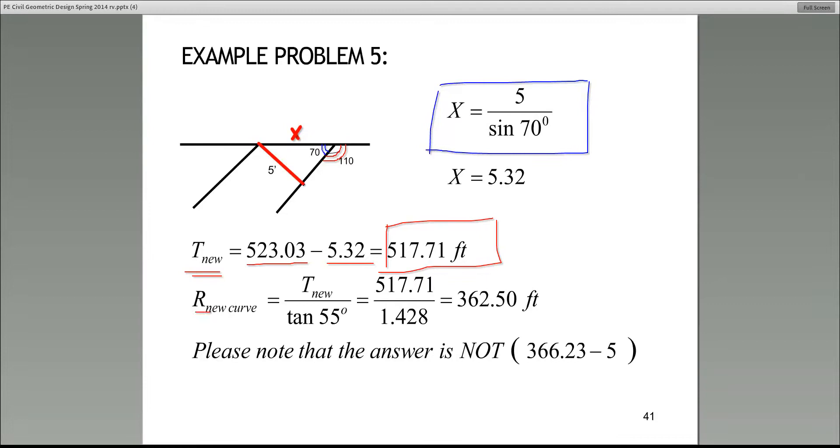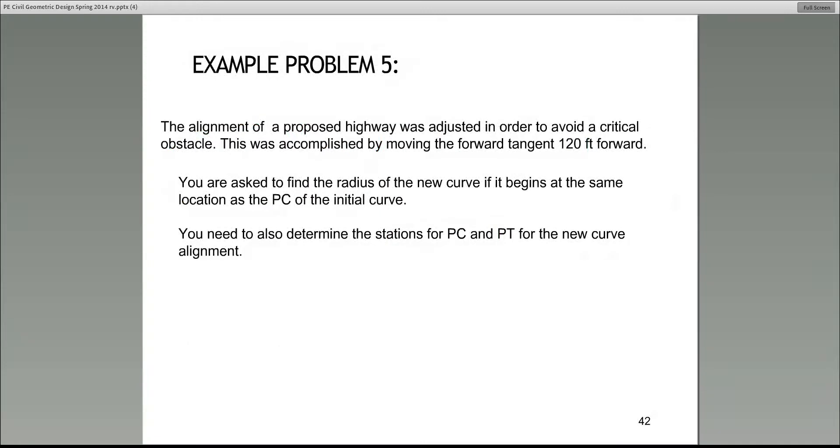And remember the problem says, what's the new radius? So the new radius will be T_new over tangent 55. And guys, where did the 55 degrees come from? That's half of i, that's half of the 110. So here's the answer. The new radius is 362.5. These kinds of problems, they all reduce to this little sketch up here, and I hope that you can follow it.